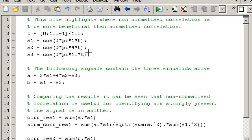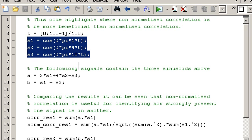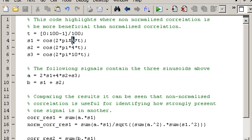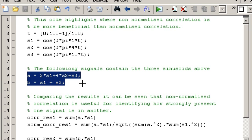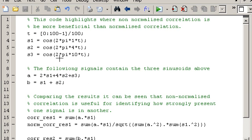This is the script I'd like to run through. I've created three sinusoids here, all of different frequencies: a 1 Hz sinusoid, a 4 Hz sinusoid, and a 10 Hz sinusoid. I'm creating two signals, A and B. These signals are made up of the sinusoids I've created. We can see that signal S1 is multiplied by 2 in A and only multiplied by 1 in B, so it's twice as strongly present in signal A as it is in B.